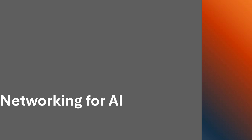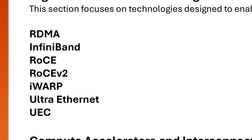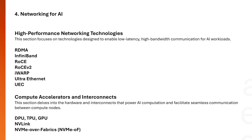In this module we will talk about high performance networking technologies. We will cover technologies designed for low latency, high bandwidth communication for AI: RDMA, InfiniBand, RoCE, RoCE v2. I will explain iWARP, Ultra Ethernet, and UAC — the Ultra Ethernet Consortium — as the first topics.